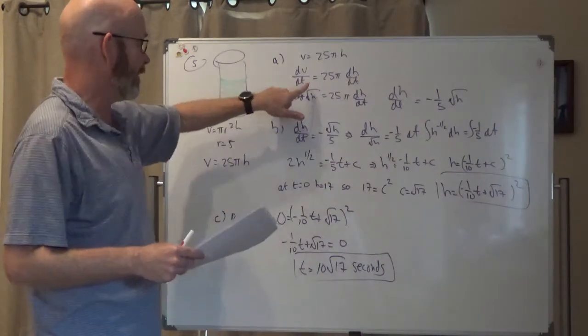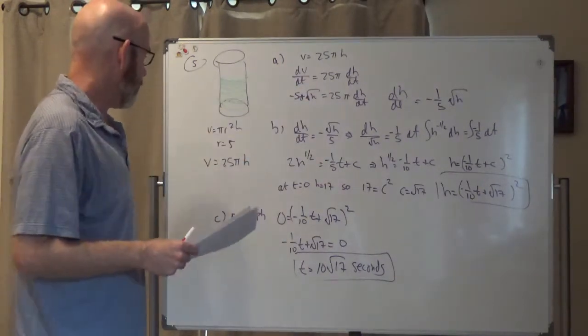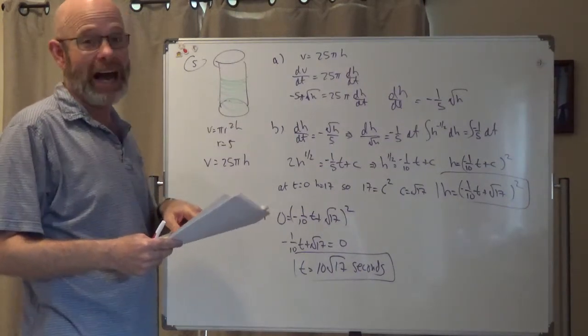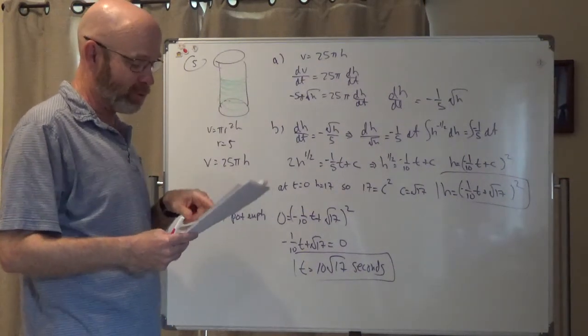They tell us that dv/dt, I didn't write this down, sorry, dv/dt is changing at negative five pi over root eight, or times root h.